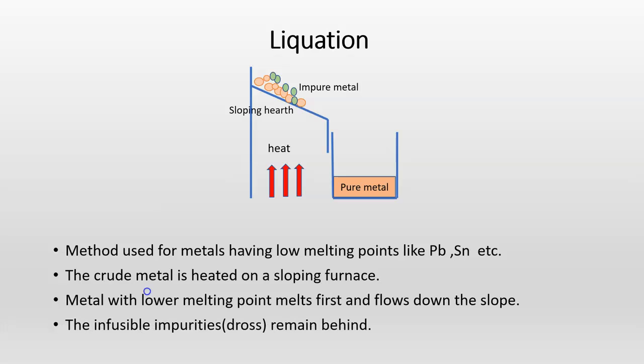The metal with lower melting point melts first and flows down from the slope, and the infusible impurities called as dross remain behind. Thus we have metal which is pure.